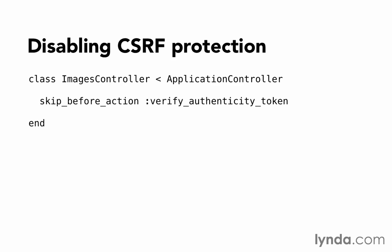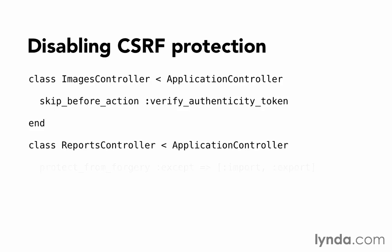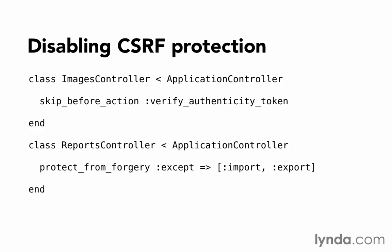If you do need to disable it, you can skip it for an entire controller by using skip_before_action :verify_authenticity_token, and that will exempt the controller from token verification. Or if you need to do it on an action-by-action basis, you can call protect_from_forgery again and pass in either except: or only:, followed by an array of the actions that either should or should not be protected from forgery.